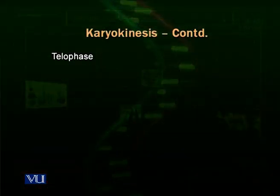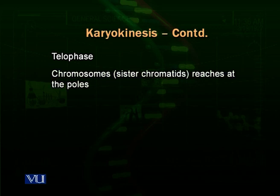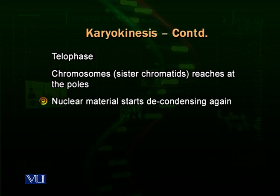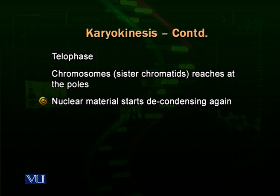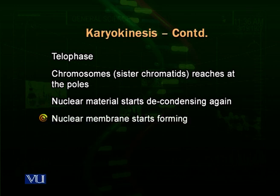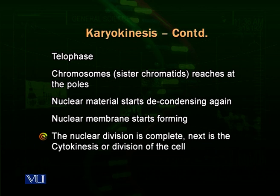Then comes the next phase called telophase. In telophase, the sister chromatids reach the poles. At this stage they start decondensing and thinning again, coming back to their normal position. The chromatin material starts recondensing, and at the end of this stage the nuclear membranes start reforming. When this stage is complete, the karyokinesis is complete, and then the cell enters into the next phase called cytokinesis — the division of the whole cell.